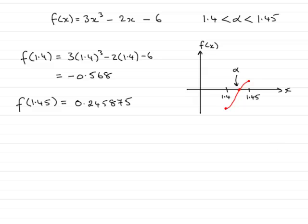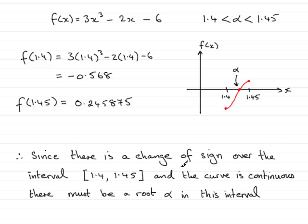And all we need to do is just say that. So I've just put it down here. Therefore, since there's a change in sign over the interval 1.4 to 1.45, and the curve is continuous, there must be a root alpha in this interval. And that brings us to the end of this part of the question.